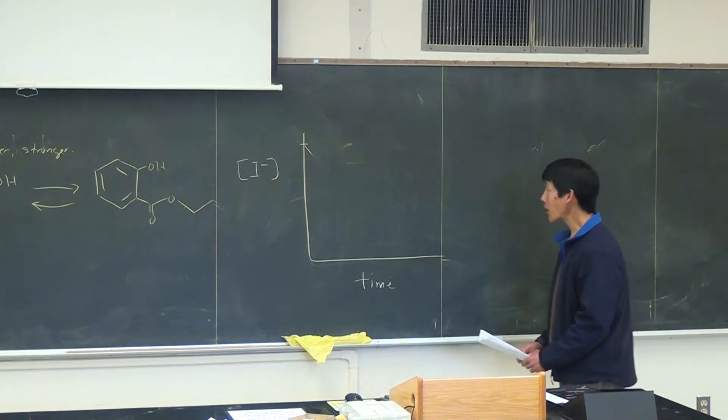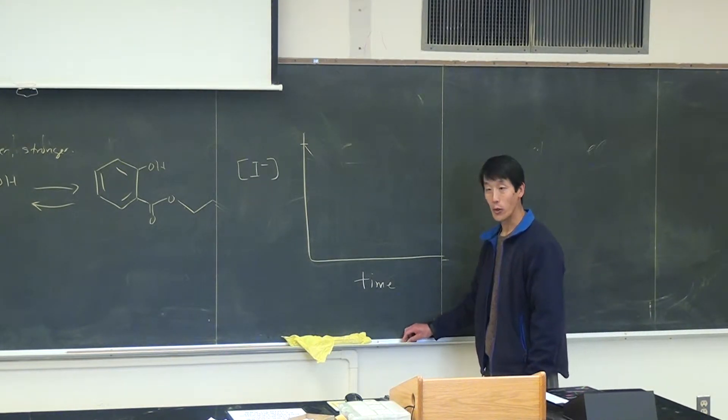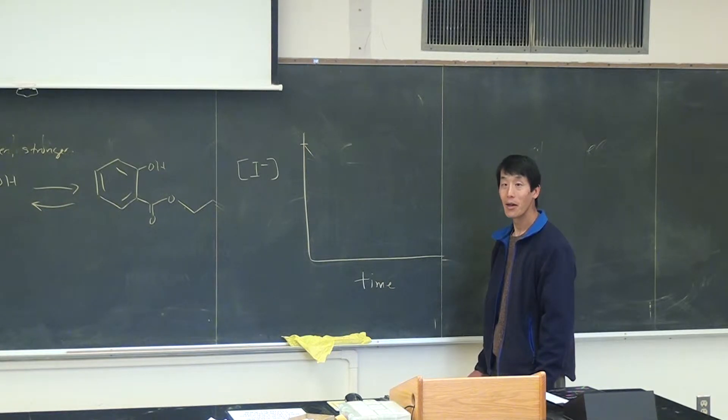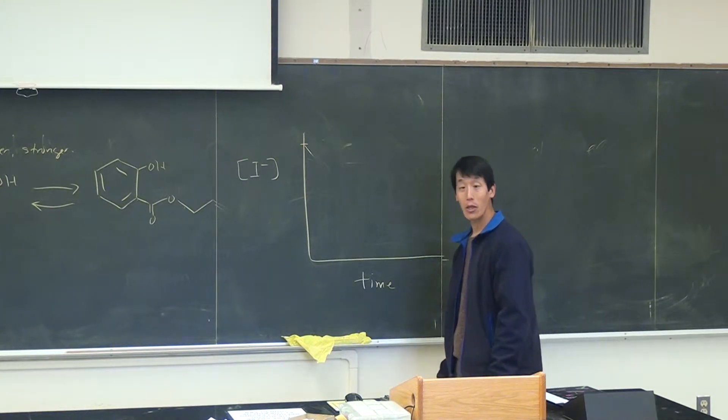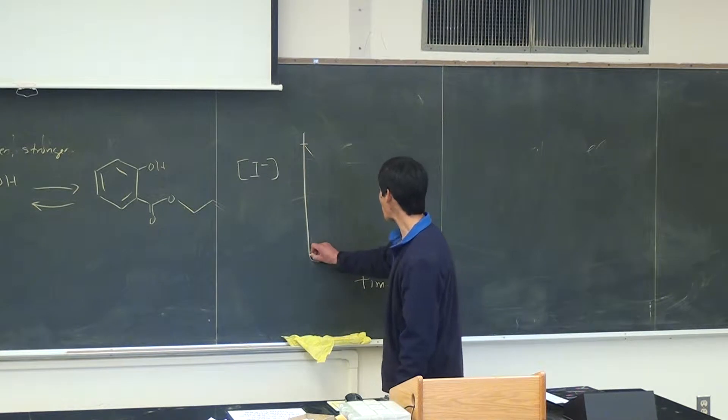So is the concentration increasing or decreasing or staying the same? Increasing. OK, now note that iodine is a product of this reaction. Increasing. So that means that the iodine should be increasing. So the graph is going to look something like this.